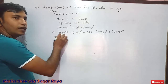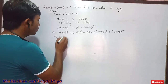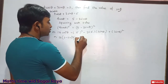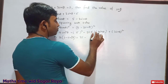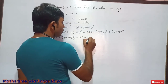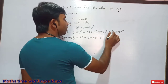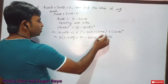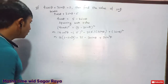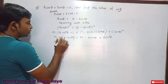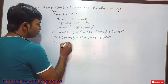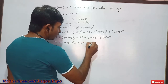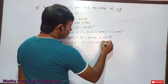Now cos²θ can be replaced using the identity: cos²θ = 1 − sin²θ. So the left side becomes 16(1 − sin²θ). The right side expands to: 5² = 25, then 2 × 5 × 3 sin θ = 30 sin θ, and (3 sin θ)² = 9 sin²θ. So we have 16 − 16 sin²θ = 25 − 30 sin θ + 9 sin²θ.